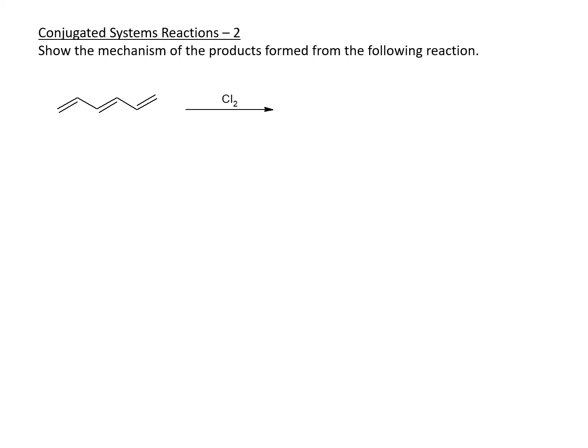Show the mechanism of the products formed from the following reaction. So let's go ahead and start this one. This is a conjugated system as well. We are reacting this with chlorine. We can start from either side because it's a very symmetrical compound. So here we go.